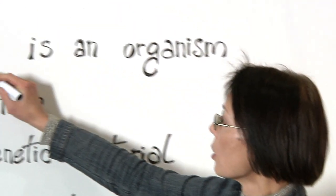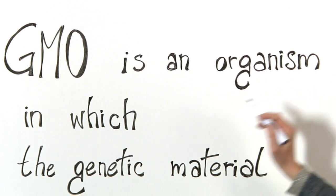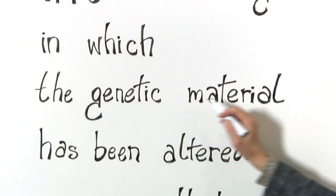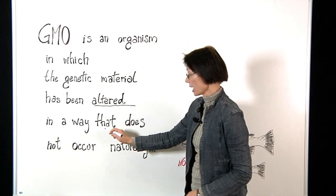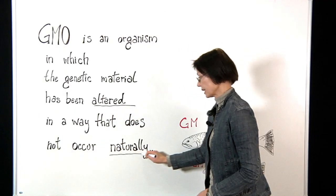A GMO is an organism in which the genetic material has been altered in a way that does not occur naturally.